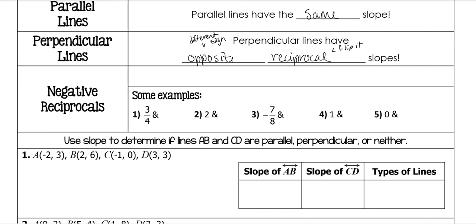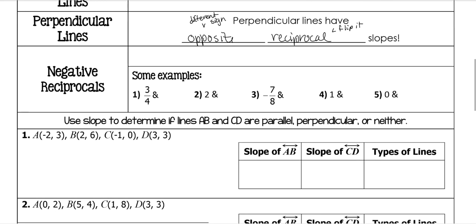In order to do opposite reciprocals, or negative reciprocals, a positive three-fourths turns into a negative. Then you flip it upside down and it becomes four-thirds. So negative four-thirds is the opposite reciprocal.